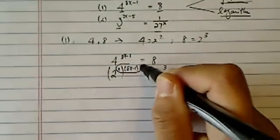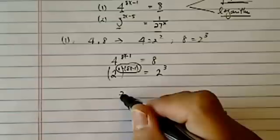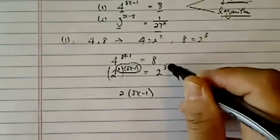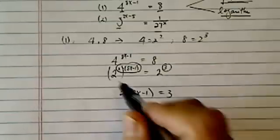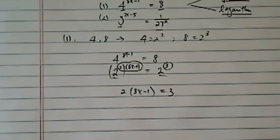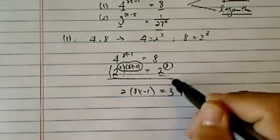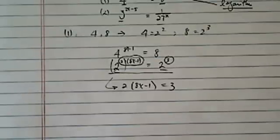When exponentials look like they're about to multiply, multiply them. So eight x minus one, and equal to three, because the base is the same. So we'll translate an exponential equation into a single linear equation, which is pretty easy to solve.